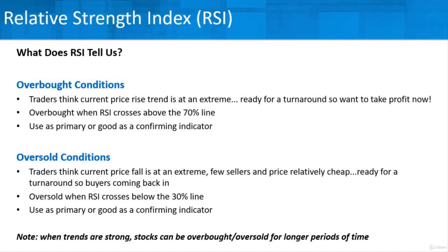When trends are strong, securities can be overbought or oversold for longer periods of time. That makes sense — with a long, well-established strong trend, people are less reluctant to get off that train. By using RSI, we can recognize that the trend might be coming to an end. If we own it and there's an overbought condition, plus another indicator signals a turnaround coming, and RSI confirms a turnaround — it might be a great time to get out. That 70% and 30% line are the key thresholds for RSI.